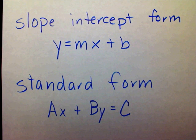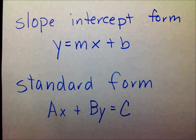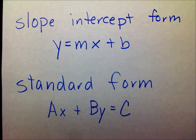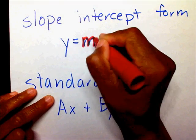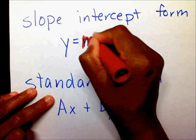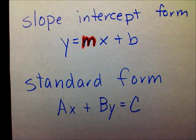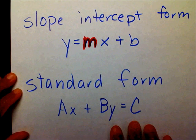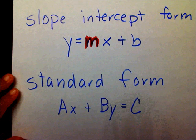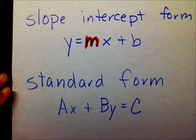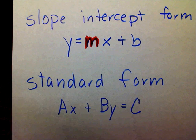In order to find the slope, the equation needs to be in slope-intercept form. If it's already in slope-intercept form, you can immediately pick out the slope. But when it's in standard form, you have to do a little work before you find your slope. Let me show you what I'm talking about.